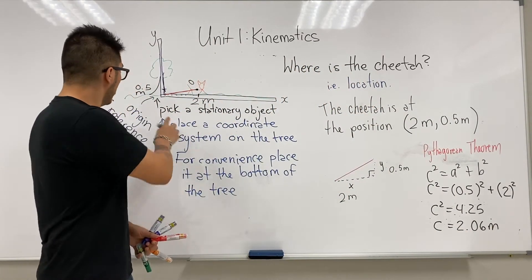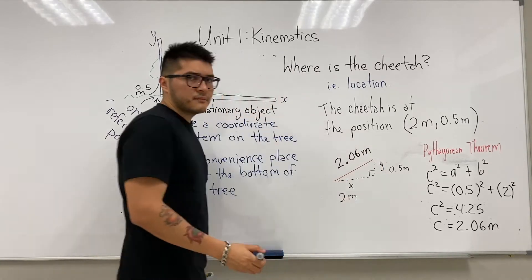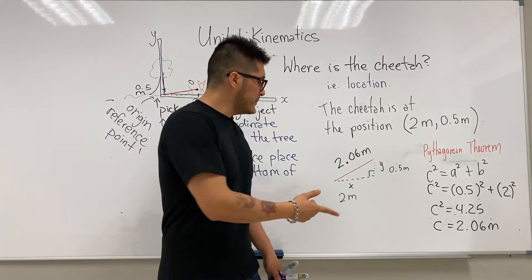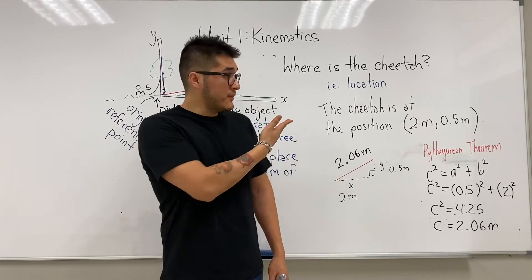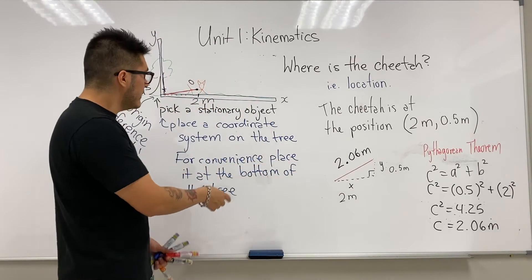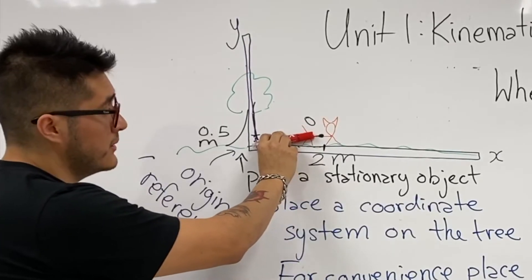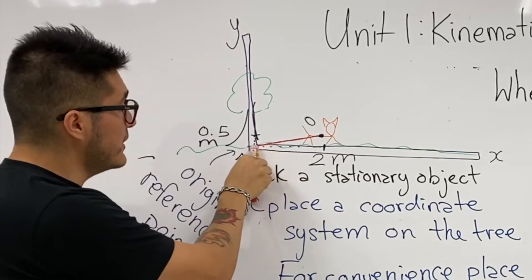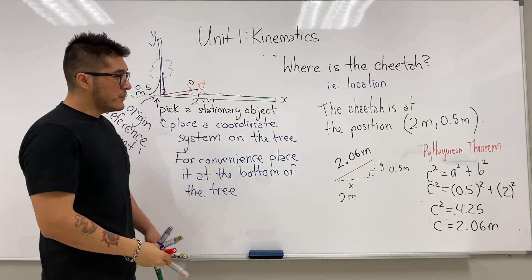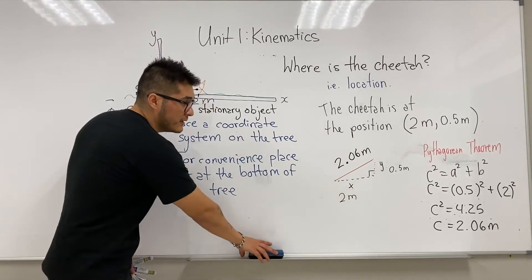So the distance the cheetah is from the origin is 2.06 meters. But that should be somewhat troubling — if you tell someone the cheetah is 2.06 meters away from the tree, there are an infinite number of possibilities. It could be below the tree, on the ground, to the left, on top of the tree, or jumping. Just giving the distance from the tree is not sufficient information in physics.